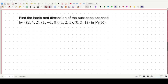The vector space is V3(R), which means it is a three-dimensional real-valued vector space. The subspace is spanned by the set containing vectors (2,4,2), (1,-1,0), (1,2,1), and (0,3,1).